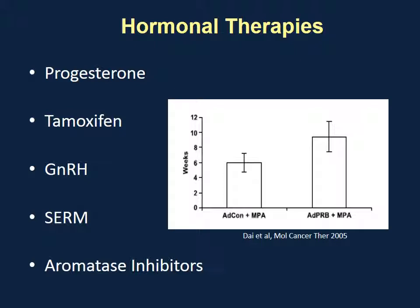The classic hormonal therapy is progesterone. We can also use tamoxifen, which is an anti-estrogen. We can use gonadotropins, which are secreted from the brain and suppress estrogen. And we can look at aromatase inhibitors — patients with breast cancer are already treated with aromatase inhibitors.